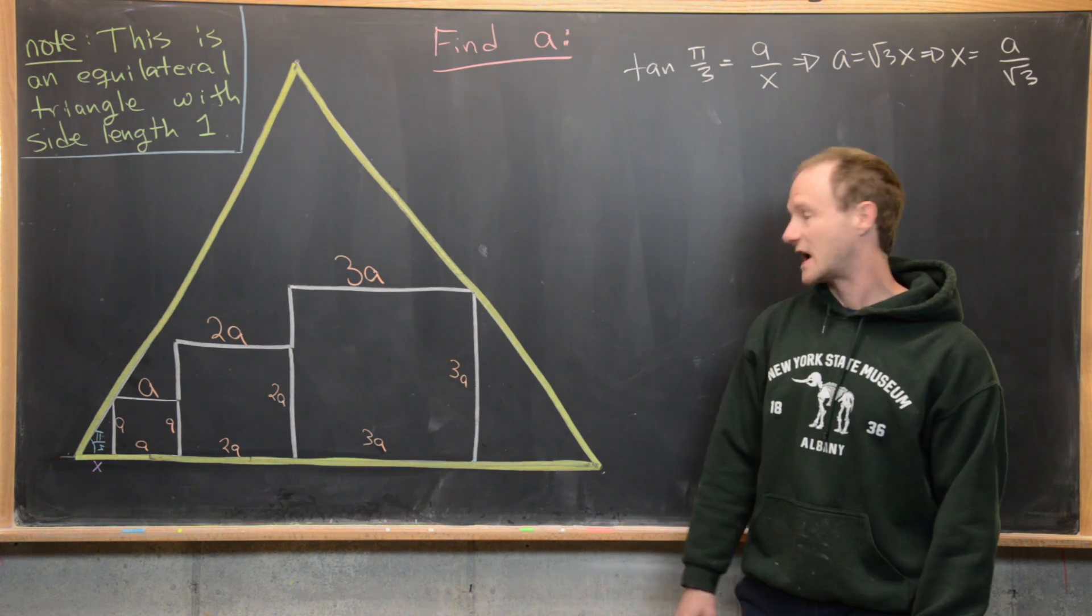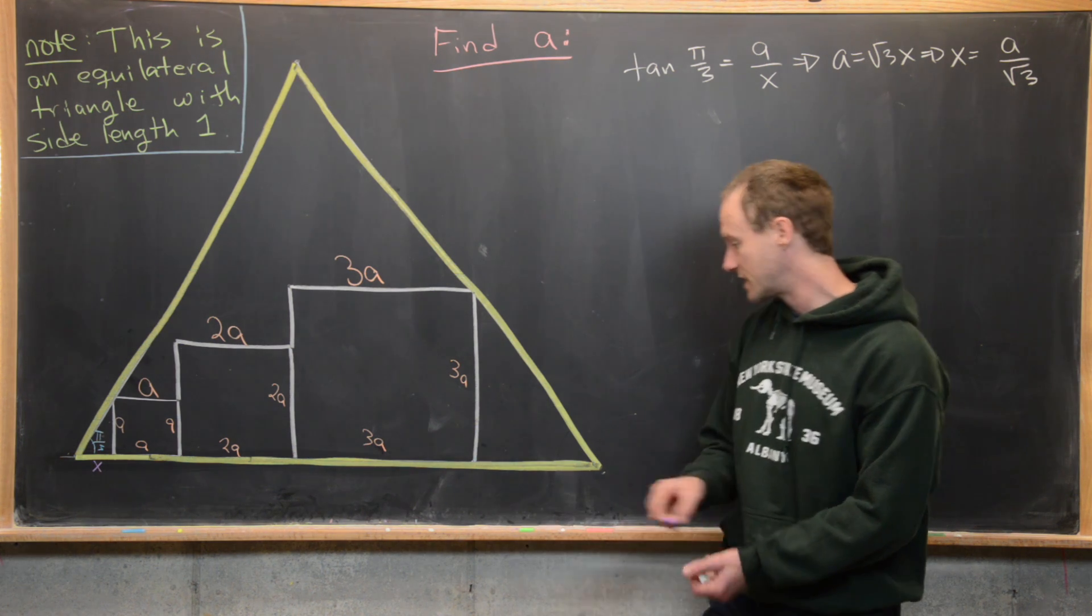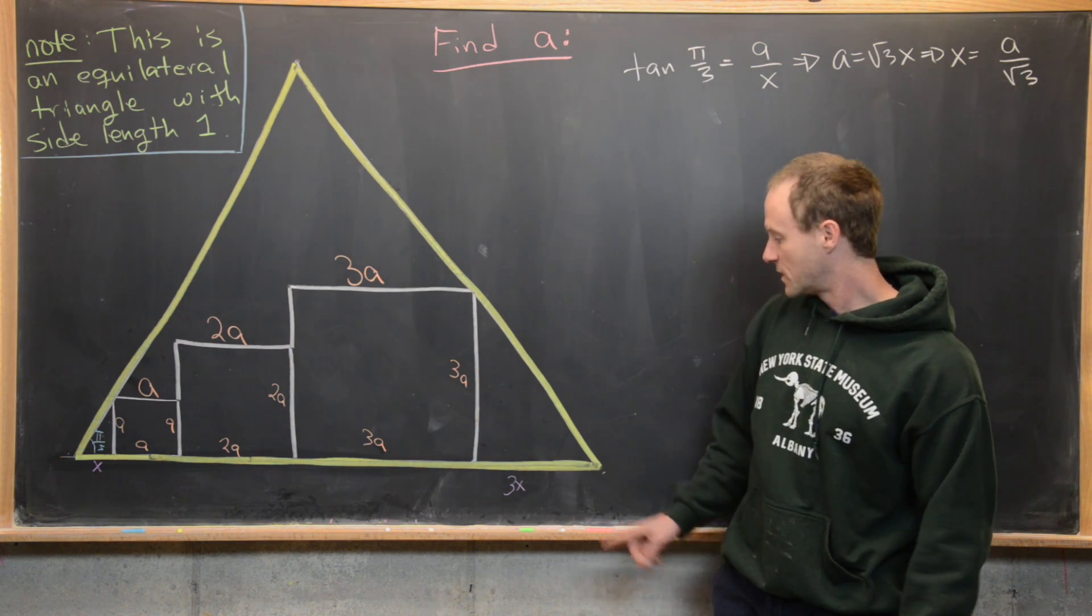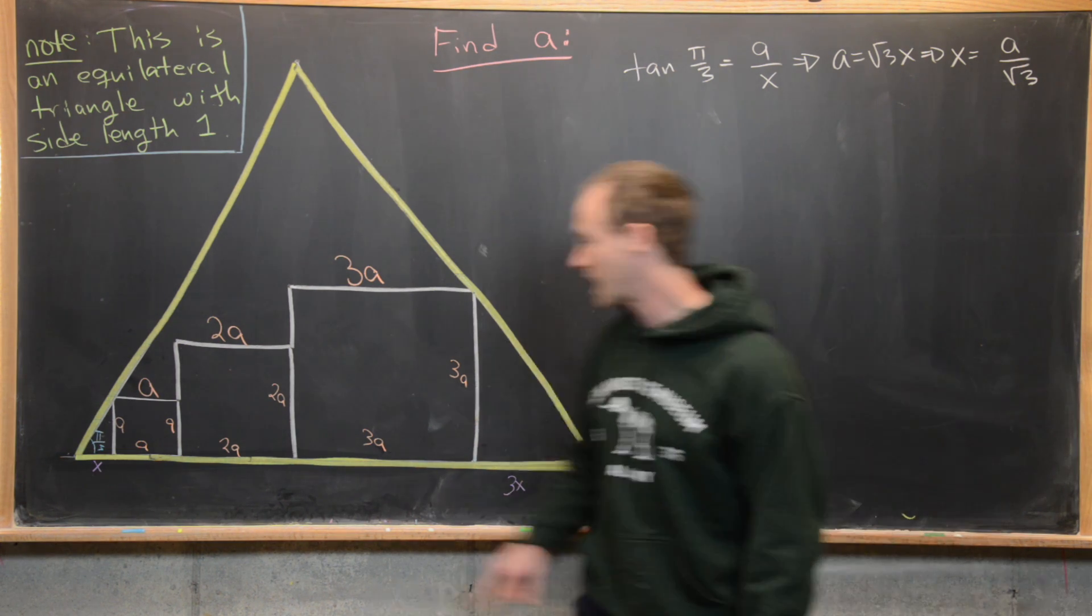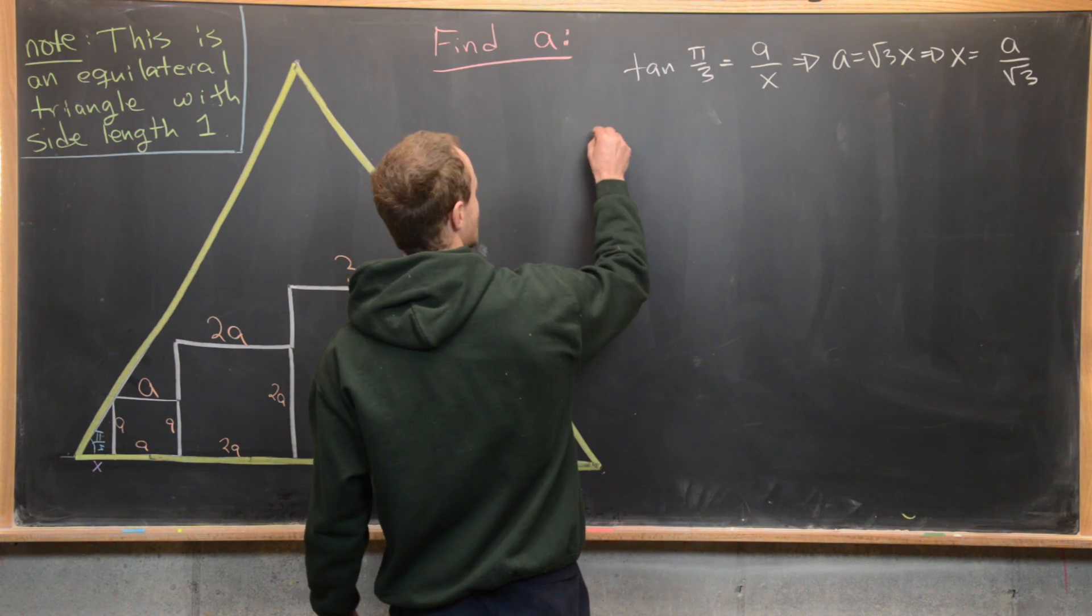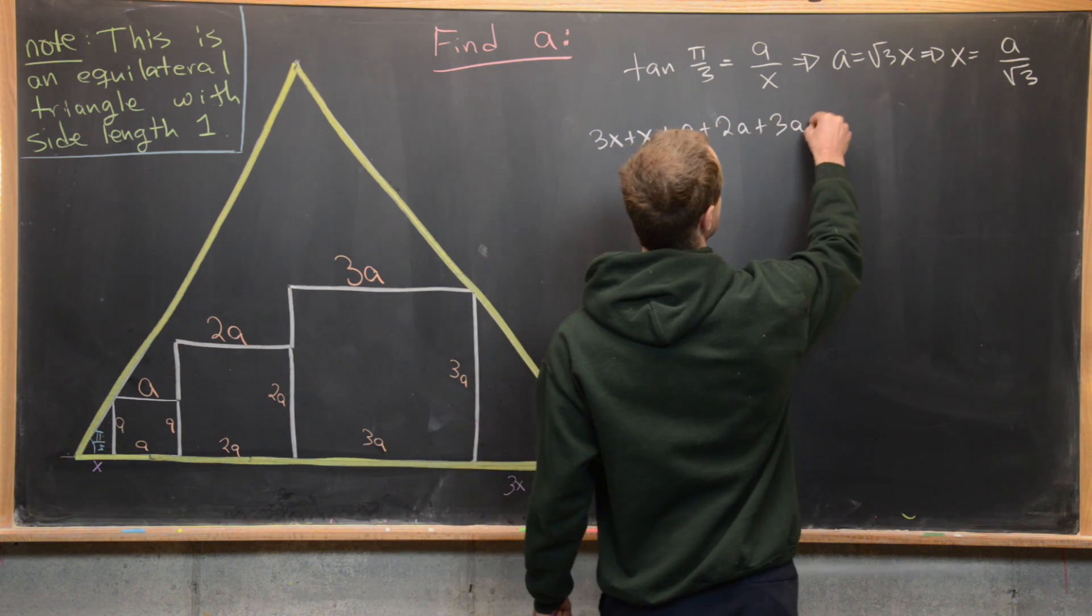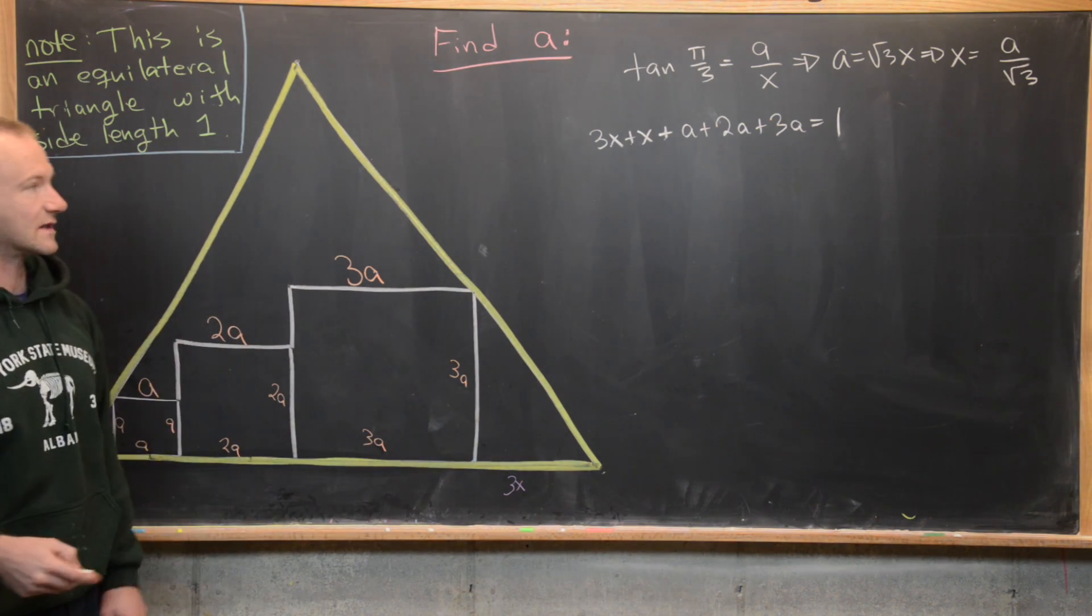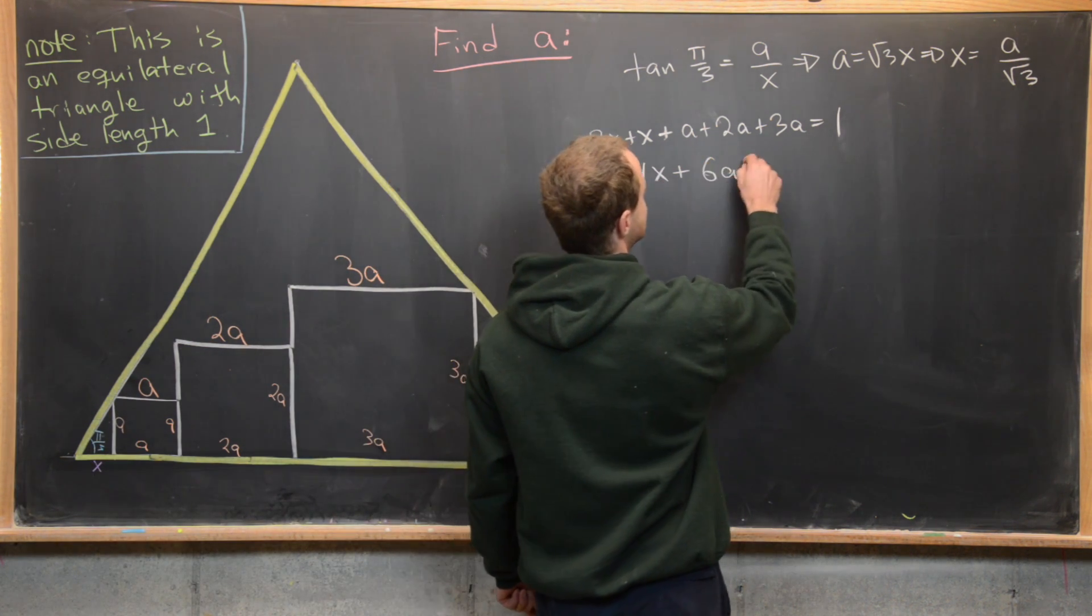That means the ratio of their sides are the same so this side is 3 times the length of this side, 3a versus a, that means this down here has length 3x. Good so now let's put this together, we know the side length of the bottom will be equal to one but that's also equal to 3x plus x plus a plus 2a plus 3a. So we have 3x plus x plus a plus 2a plus 3a is equal to one because that's comprising the entire side of this equilateral triangle with side length one. But now notice we can combine like terms here and we get 4x plus 6a equals one.